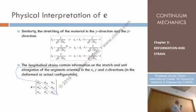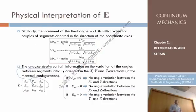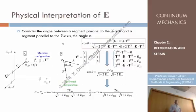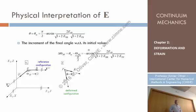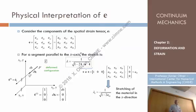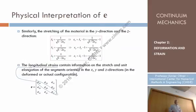The formula is different depending on configuration. The formula for the material configuration has the square root in the denominator, while for the spatial configuration the square root appears in the numerator. What is important is that in both cases they involve the component E11 or EXX, and the same applies for the other coordinates.